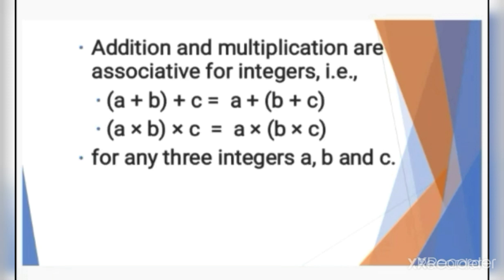The next property is that addition and multiplication are associative for integers. That means if we have to add 3 or more integers, we can add them in any order. Or if we have to multiply 3 or more integers, we can multiply any 2 first and then the third. So for integers A, B, and C: we can do A plus B first and then add C, or add B plus C first and then add A. The same applies to multiplication.